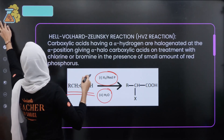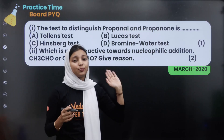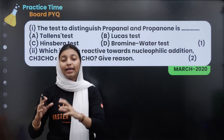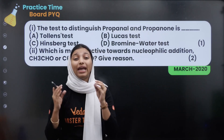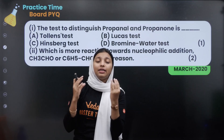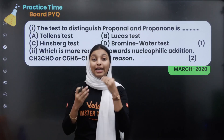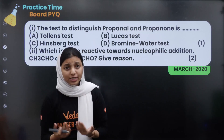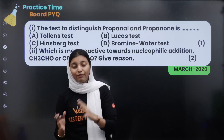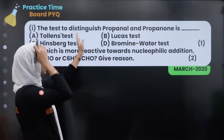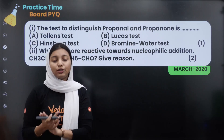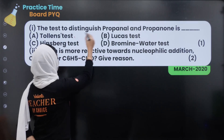The next question: tests to distinguish propanal and propanone. Another important topic in Aldehydes, Ketones and Carboxylic Acids is how we distinguish aldehydes and ketones. The tests include Tollens test, Fehling's test, and sodium bisulfate test.